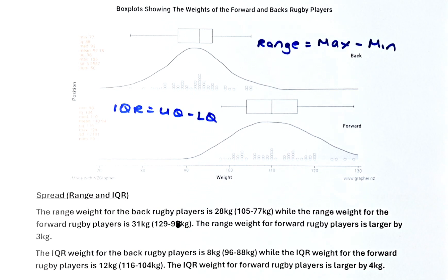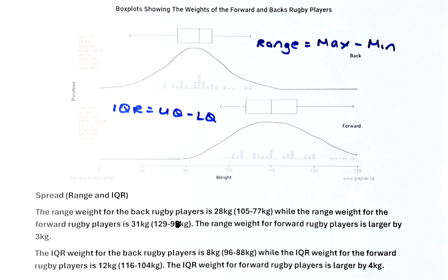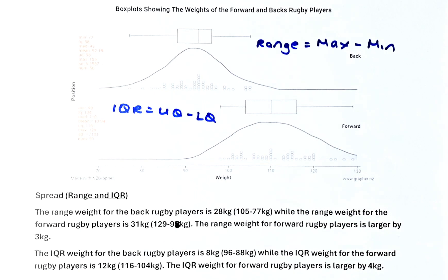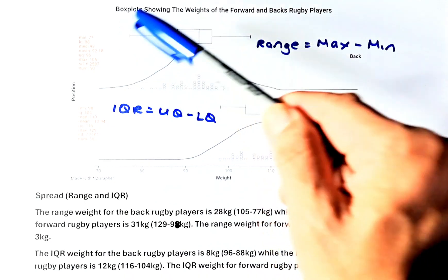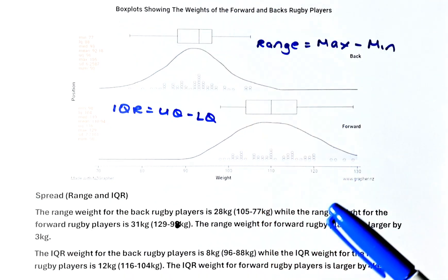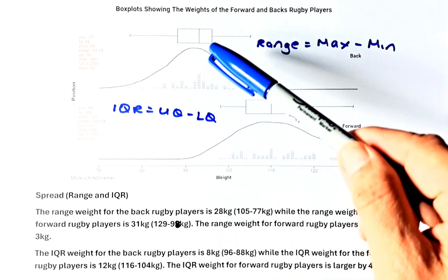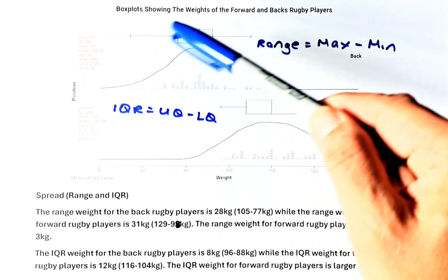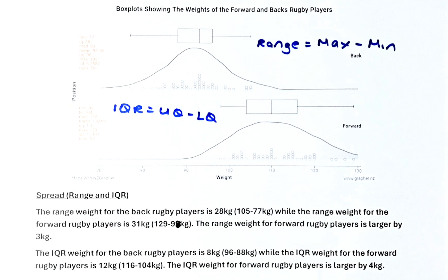The interquartile range is the 75th percentile, which is the upper quartile, minus the 25th percentile, which is called the lower quartile. So the range spans the smallest to the biggest, and the interquartile range is the box — also called the middle 50 percent.